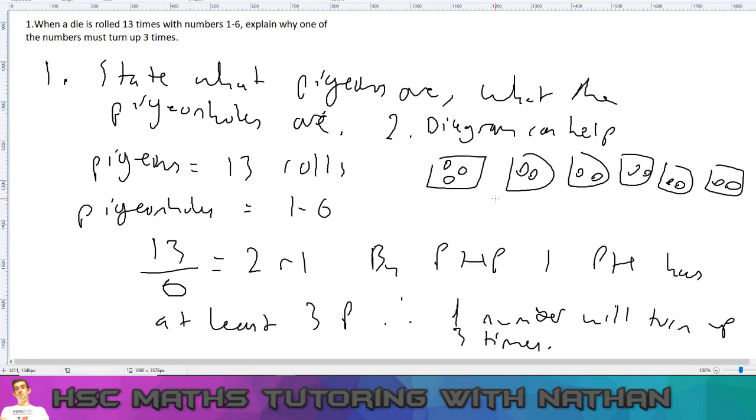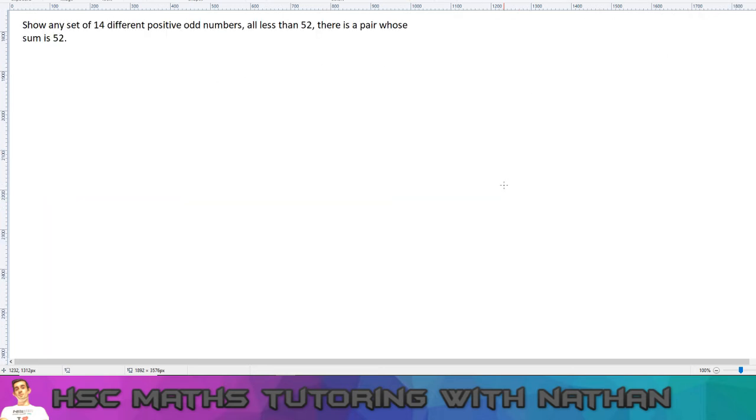Okay, so that's a relatively straightforward application of the pigeonhole principle. So let's look at a more difficult one. If you have any questions, just make sure to comment below. Okay, so the next one: show in any set of 14 different positive odd numbers less than 52, there is a pair whose sum is 52.